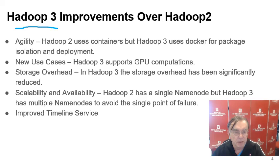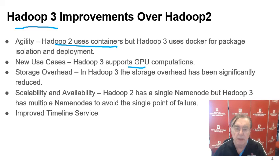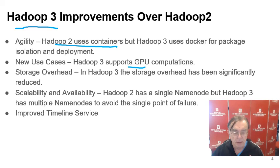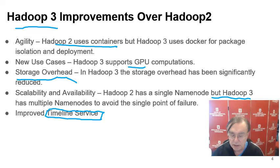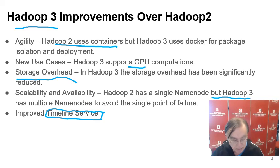Hadoop 3 has significant improvements over Hadoop 2. Hadoop 3 supports GPUs and uses Docker containers — Docker being essentially a Linux container, fairly old-fashioned technology but made easier to use. Storage has been significantly improved with better support for small files. We now have multiple name nodes for redundancy. There is also the timeline service, sometimes called provenance, which captures all the pieces of information specifying how we ran, how long we took, what we did — essentially provenance metadata.